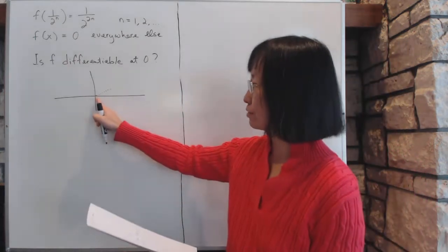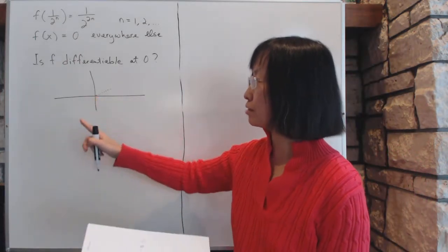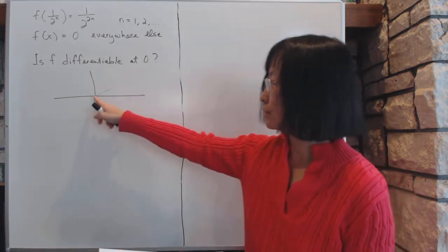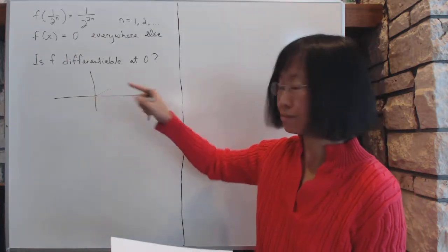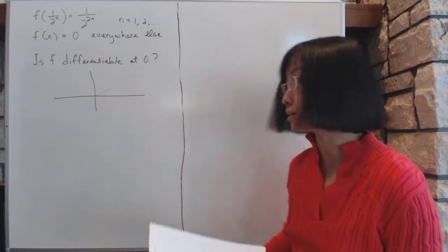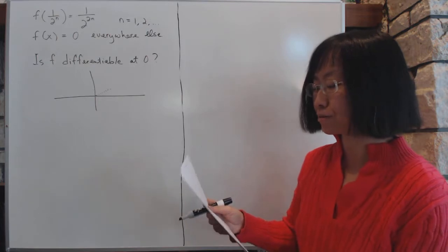If it is differentiable, you notice that around zero it has a very odd point, because every neighborhood of the zero point has stuff jumping out into the air, so it doesn't even look continuous. So how can it be differentiable?